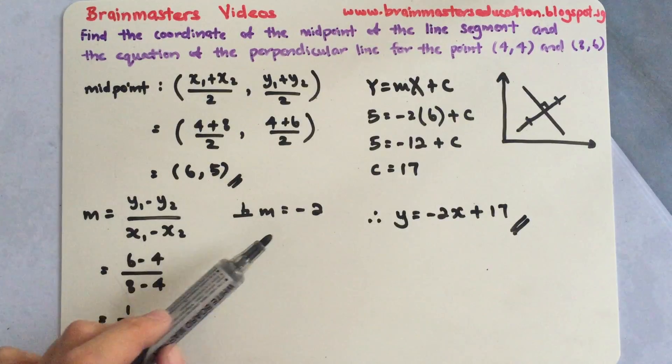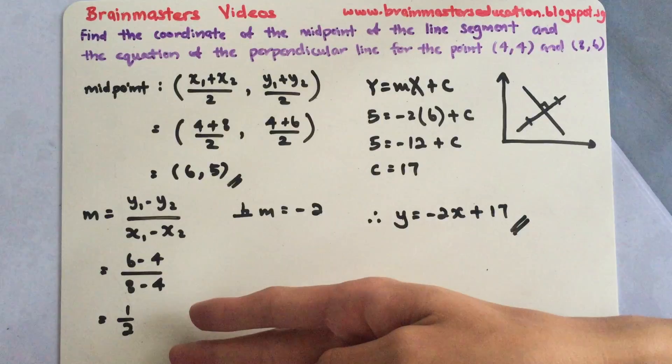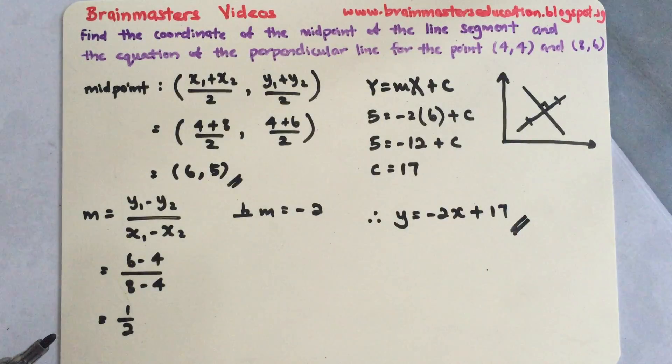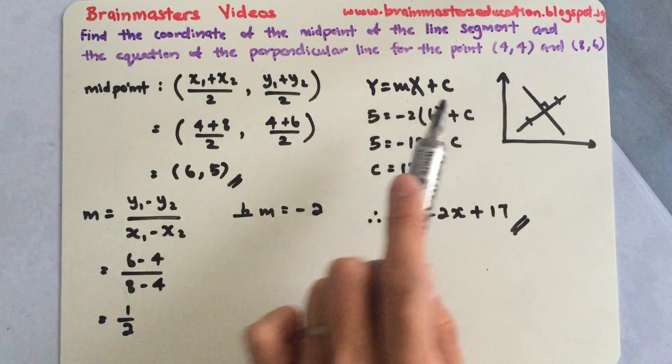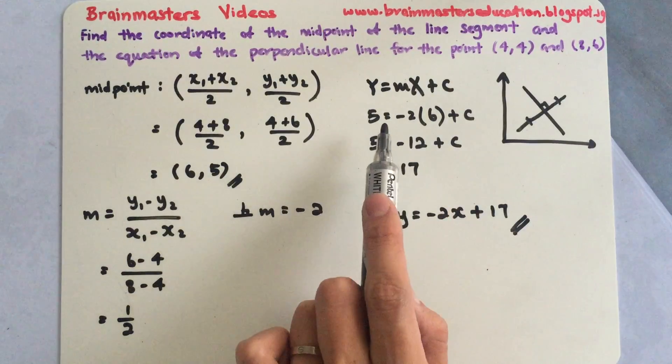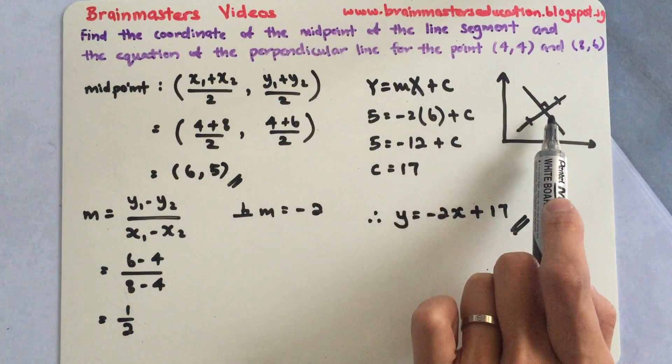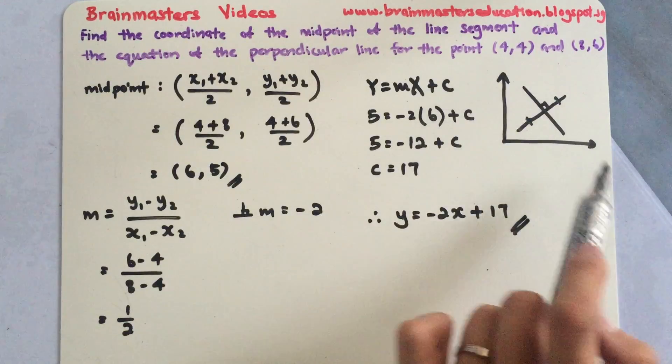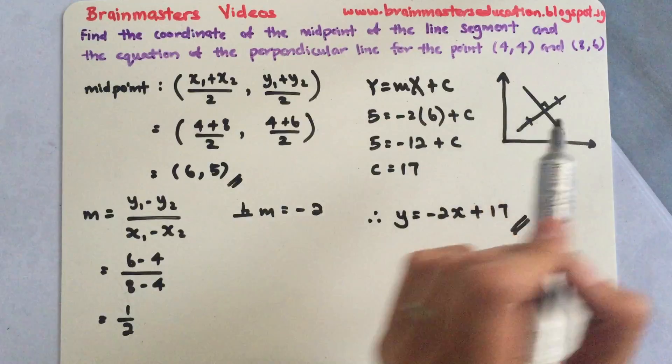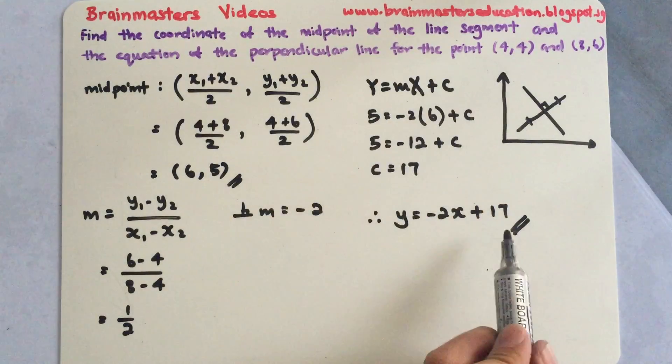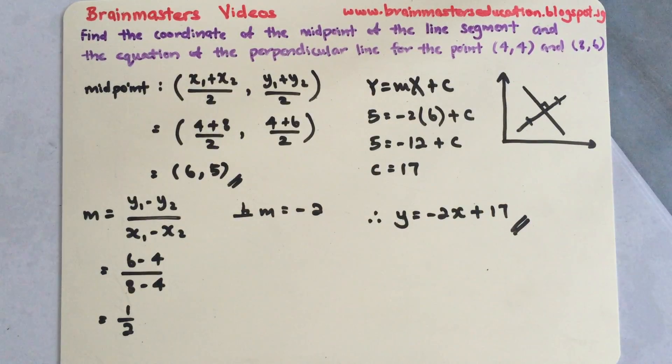I repeat, for the perpendicular gradient, you just need to flip these two around and add a negative. And to find a straight line, you need to use y equals mx plus c. Why do I use (6,5)? Because it cuts the midpoint for the perpendicular. Because perpendicular line means it cuts it into equal parts. So when I rewrite my equation, this will be it.